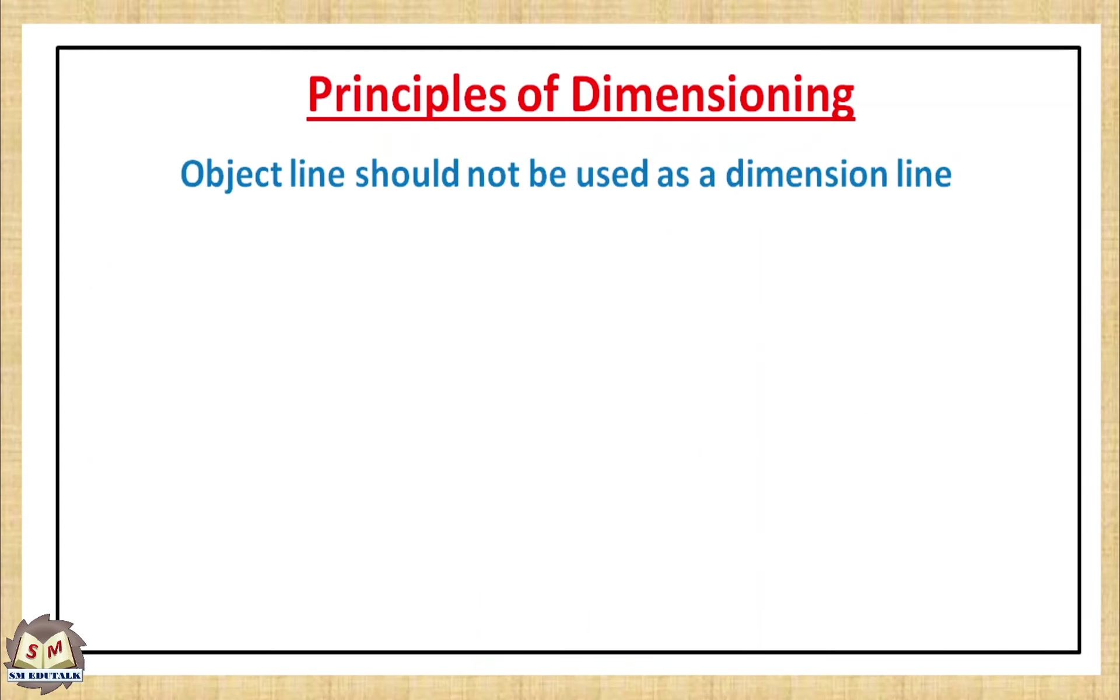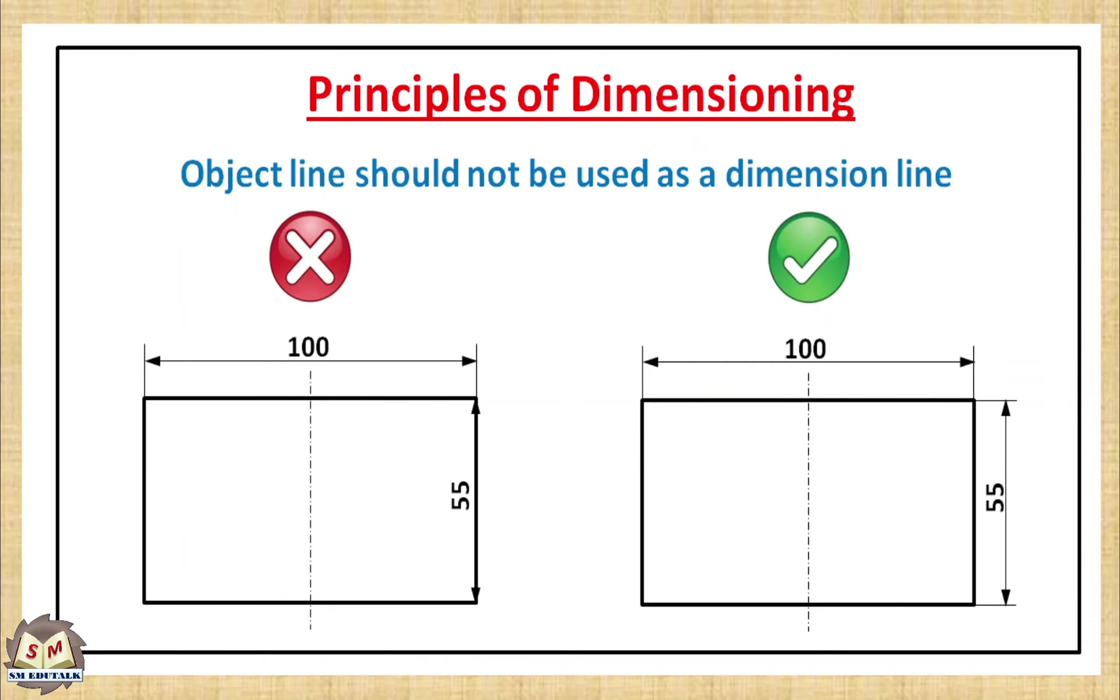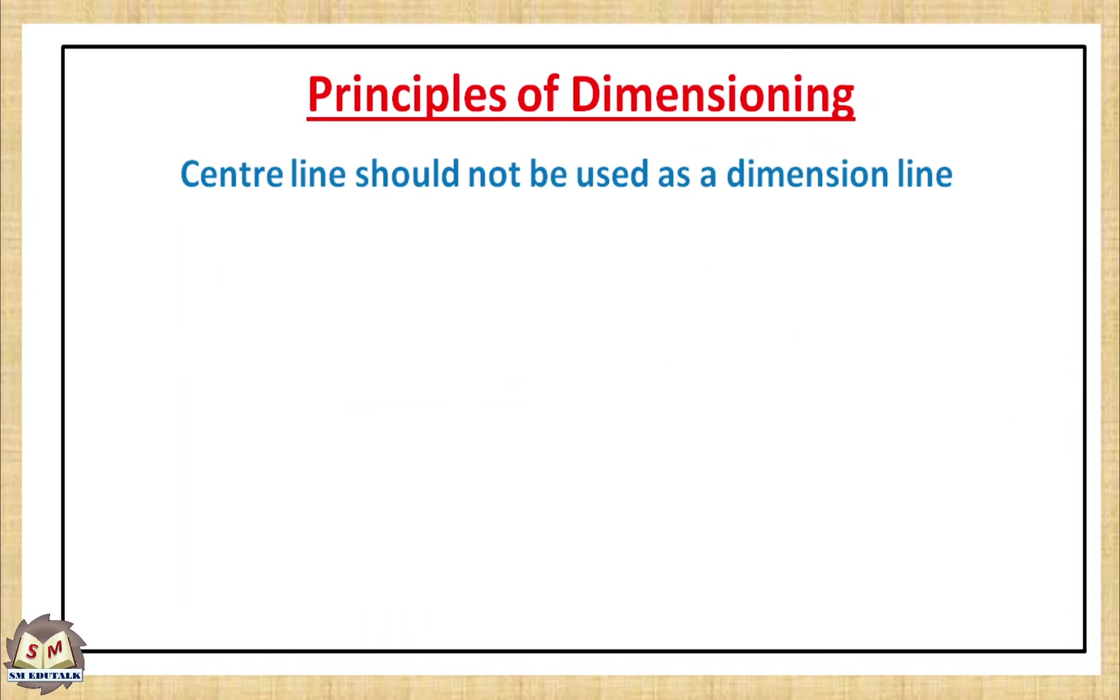Object line should not be used as a dimension line. In this object the height of the object is 55mm. Here the dimension line is kept on the object line itself. In other words, object line acts as a dimension line. So this is wrong. To avoid this, use extension line and then a separate dimension line to do dimensioning. And this one is correct.